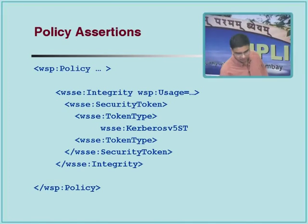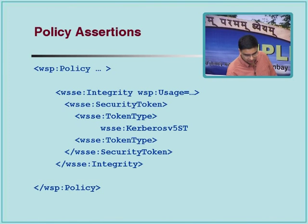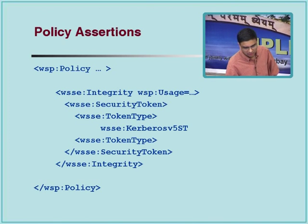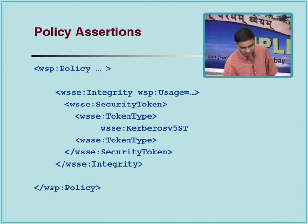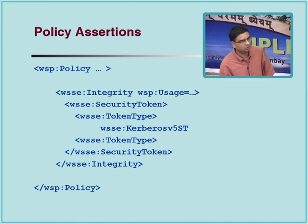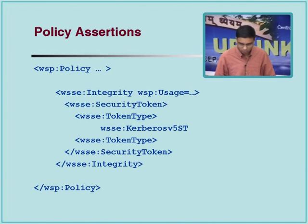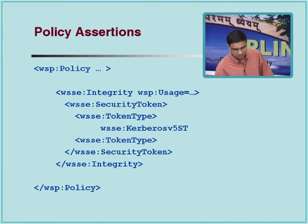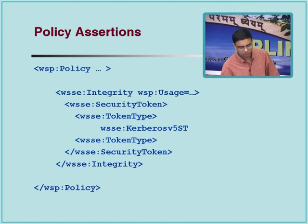Here is an example of a policy — this is a security policy because it has something to do with security, specifically integrity. You can specify the usage as one of those four things: required, optional, and so on. Then we are saying that we are talking about a security token which is a Kerberos kind of token. That means whatever authentication is going to be done has to accept this Kerberos token that is going to come across — that is what you are expressing here as part of a policy.